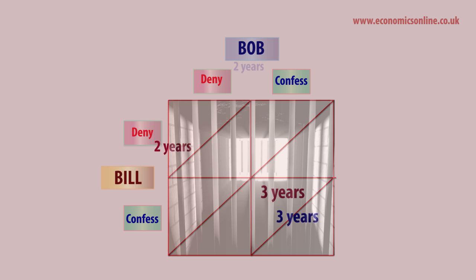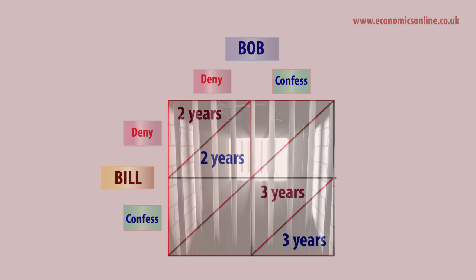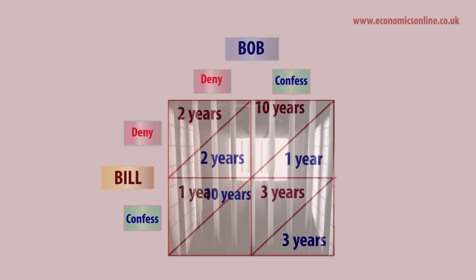But if one confesses and the other denies, the one who confesses will get just one year, while the one who denies will get ten years. The dilemma is clear: the least risky solution is to confess, because denying and having your associate confess gives the worst possible jail sentence. Both players predict the other will confess, so they both confess — this is the dominant strategy.